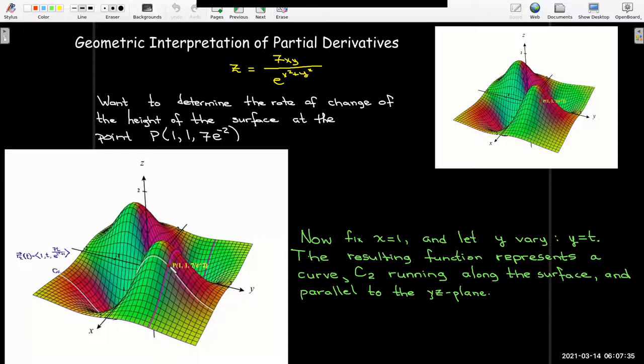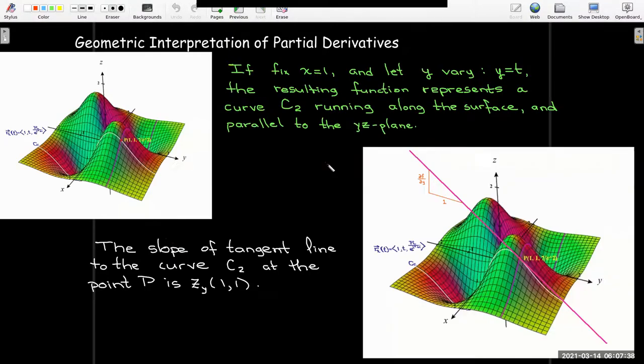And so at the point P, the slope of the tangent line there is going to be the partial derivative with respect to y. So our partial derivatives then are actually slopes of tangent lines of these curves that are running parallel to the zy plane or the xz plane and run along the surface. And that's really our geometric interpretation.